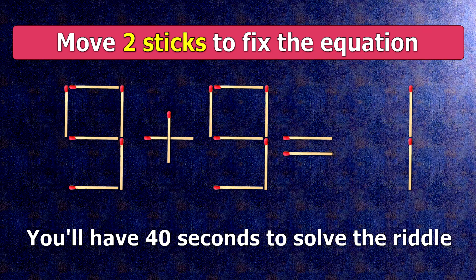We have the equality 9 plus 9 equals 1. Our equality is wrong. We need to move two matches to make our equality correct.